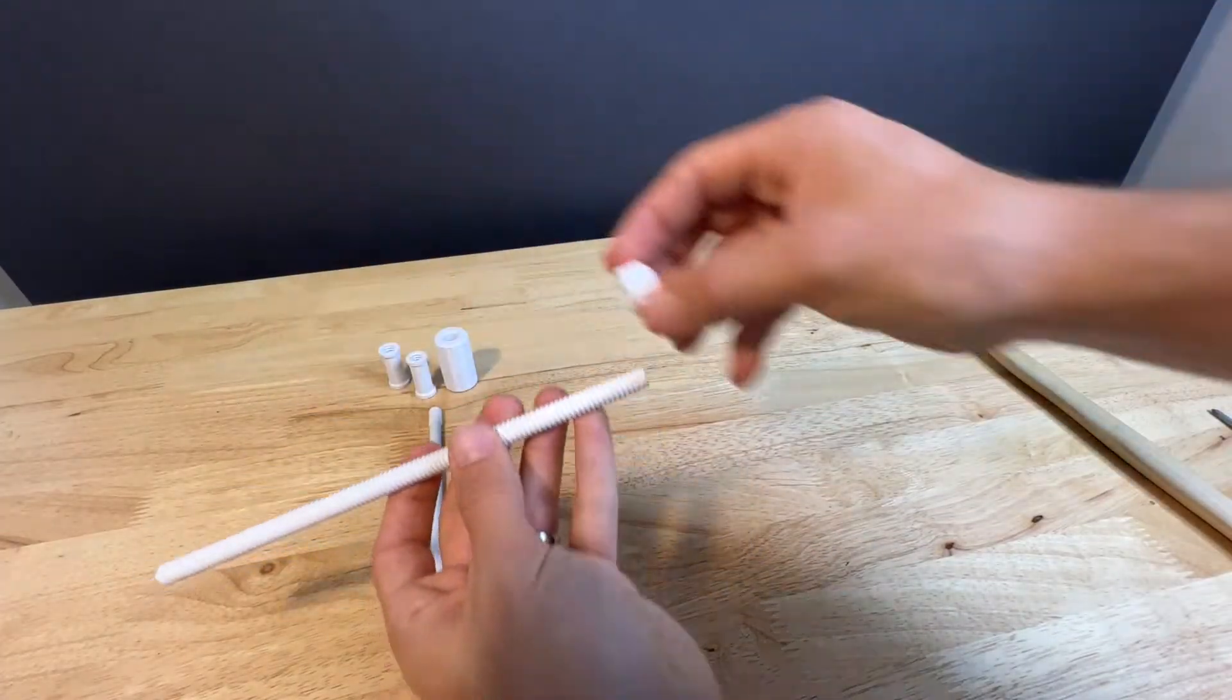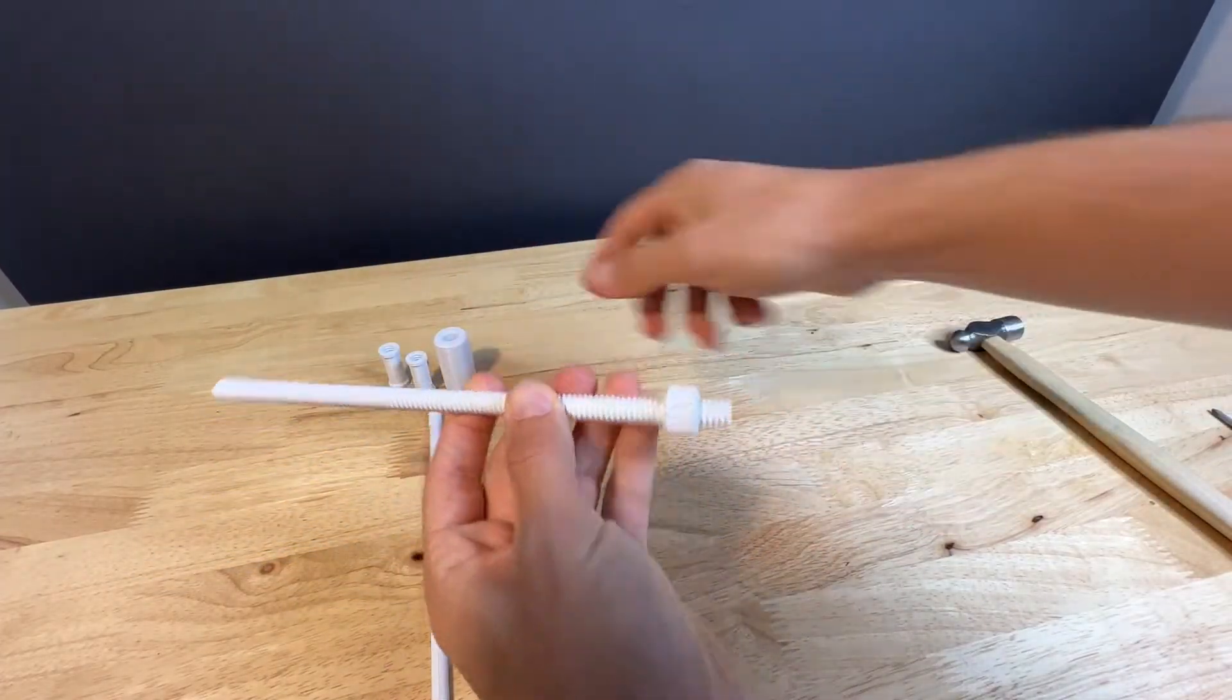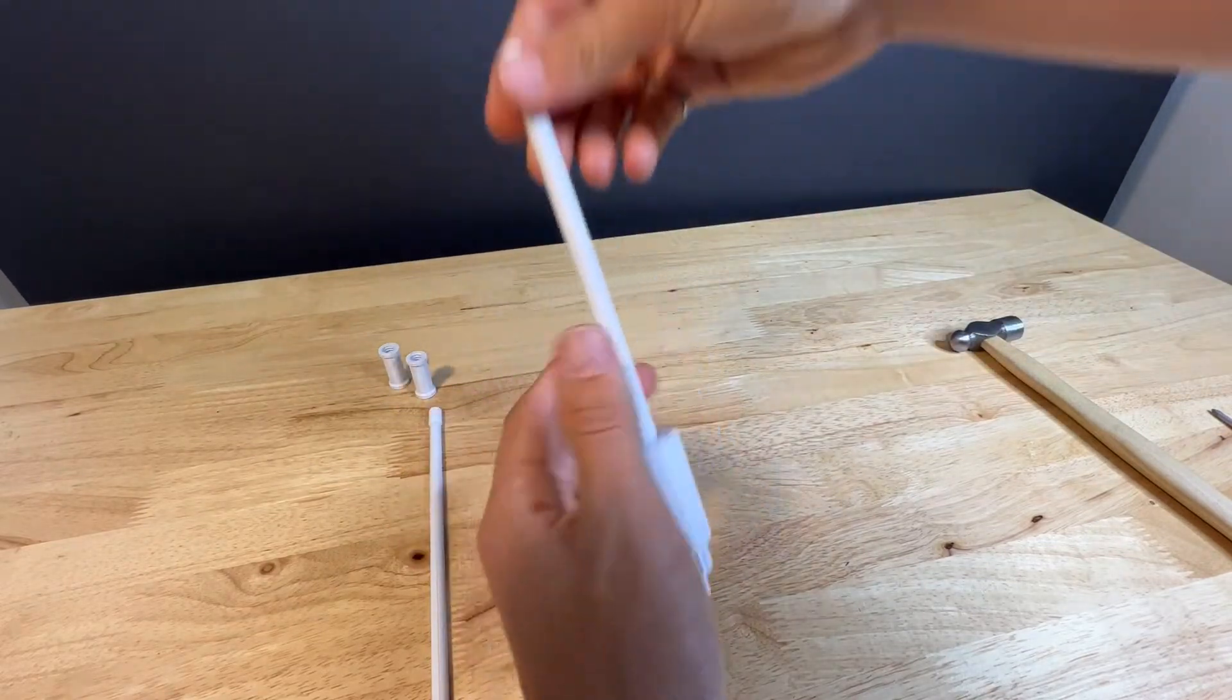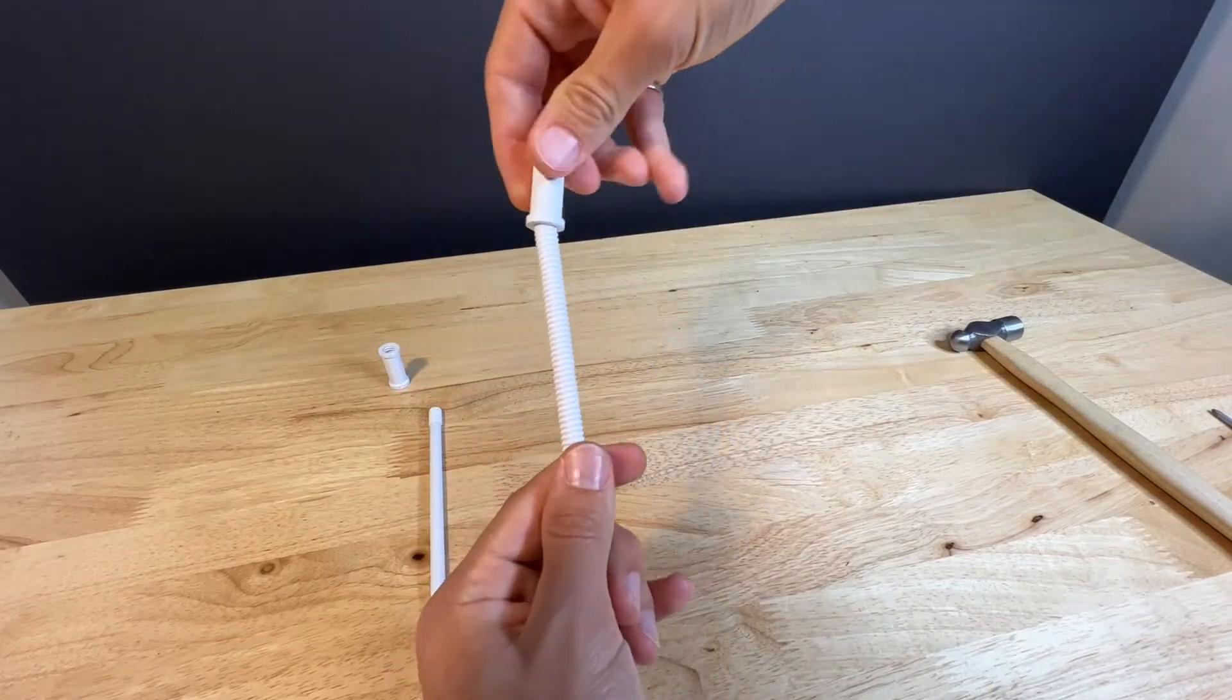Next we're going to assemble the pendulum, so let's start with the adjuster piece that screws onto the end of the fully threaded rod. Drop the weight on, and then an adapter piece on the other end of that.